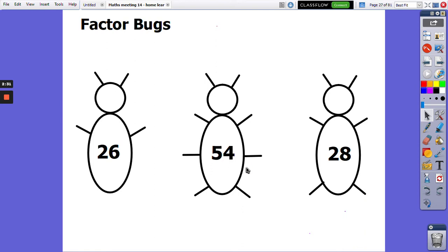Okay, let's see, shall we? Remember, every number has 1 and itself as factors. So 26 has got 1 and 26. It's also got 2 and 13. 2 multiplied by 13 is 26. 54 has got 1 and 54. It's also got 2 and 27, 3 and 18, 6 and 9. Well done if you've got those ones correct.